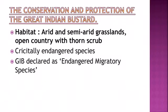In India, GIB is present in Desert National Park Sanctuary in Rajasthan, Malaya in Gujarat, Warora in Maharashtra, and Ballari in Karnataka. It is included in Schedule 1 of the Indian Wildlife Protection Act 1972 and listed as Critically Endangered on the IUCN Red List. Recently, GIB was declared an Endangered Migratory Species at the Conference of Parties to the Convention on Migratory Species (CMS) and included in Annex 1 of CMS. Major threats include habitat destruction, overgrazing, high-tension power lines obstructing its flight, and predation by domestic dogs.